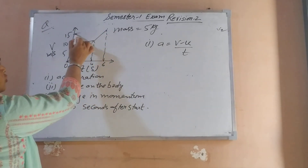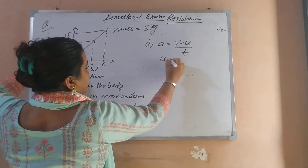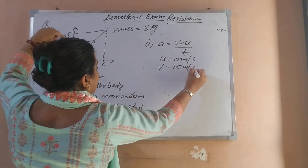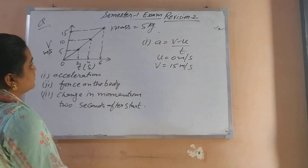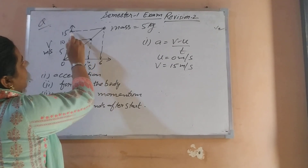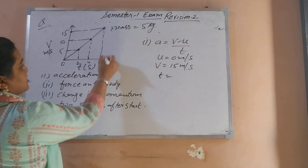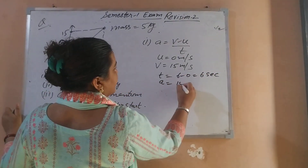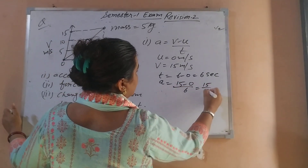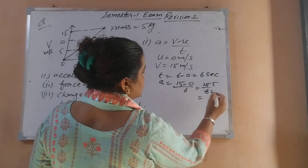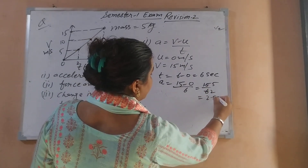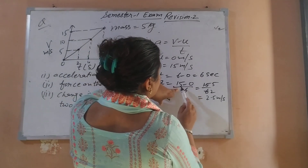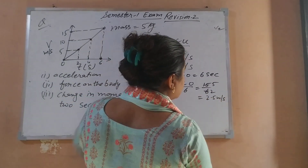Draw a perpendicular line on the x-axis and corresponding y-axis values. From the graph, initial velocity is 0 and final velocity is 15 m/s at time 6 seconds. So A = (15 − 0) / (6 − 0) = 15/6 = 2.5 m/s².